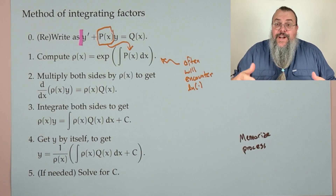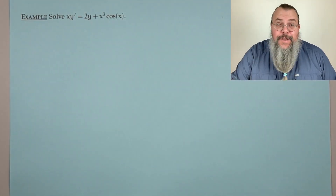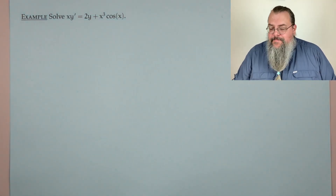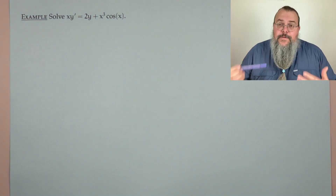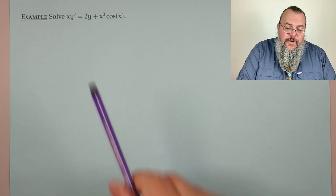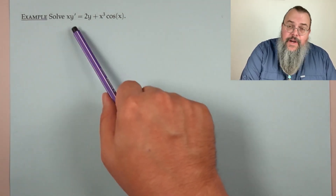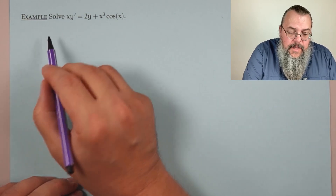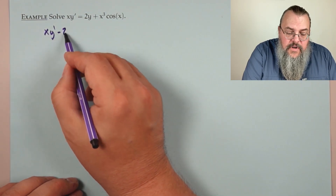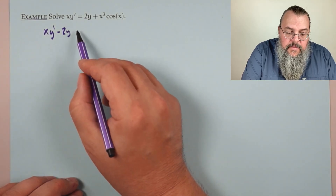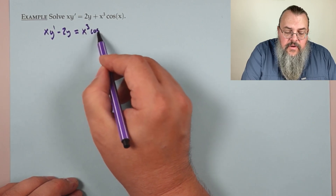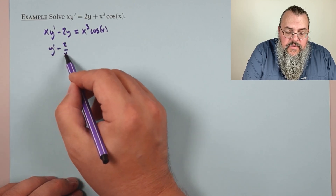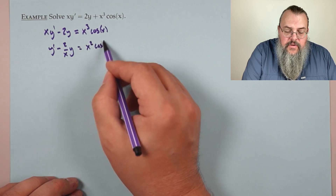First practice example: solve xy′ = 2y + x³cos(x). First rewrite it: move 2y across to get xy′ − 2y = x³cos(x), then divide by x: y′ − (2/x)y = x²cos(x). Don't be nervous about the right-hand side yet — we still need to find the integrating factor.